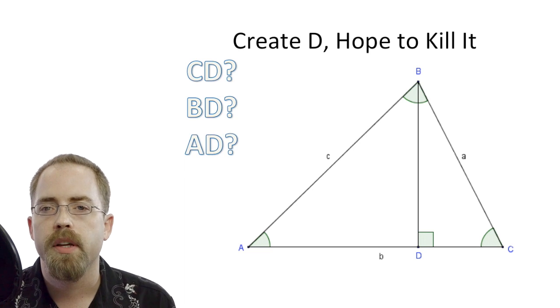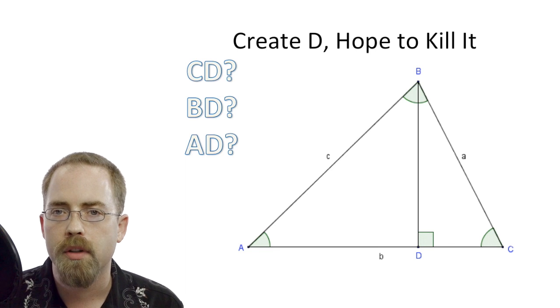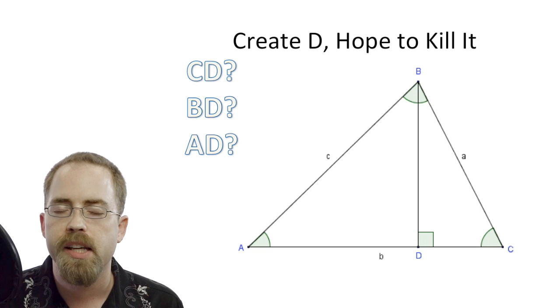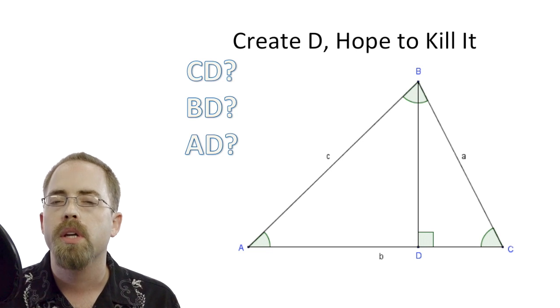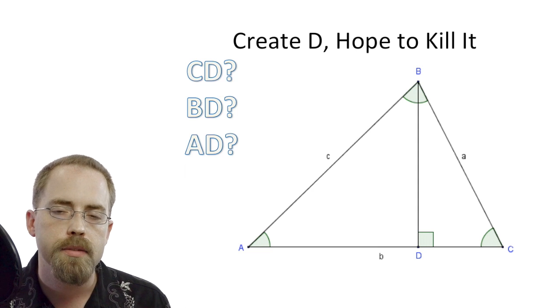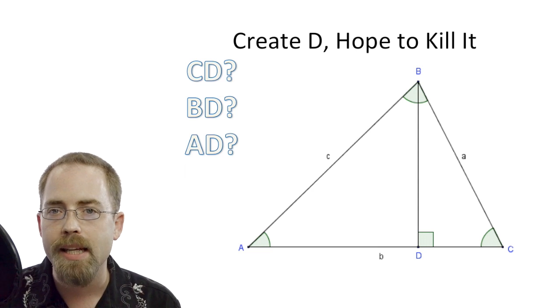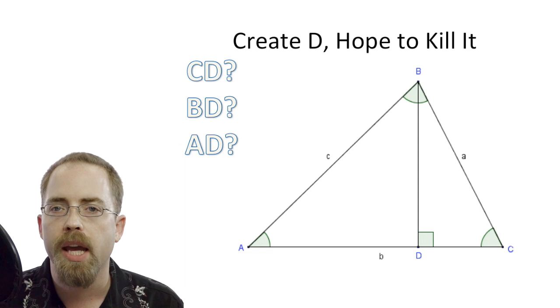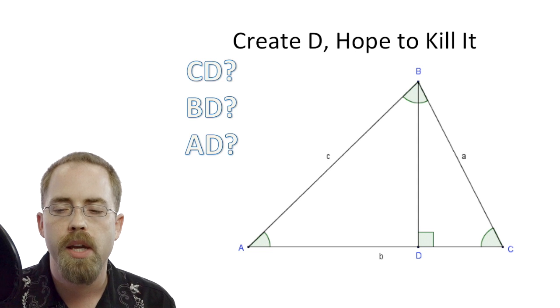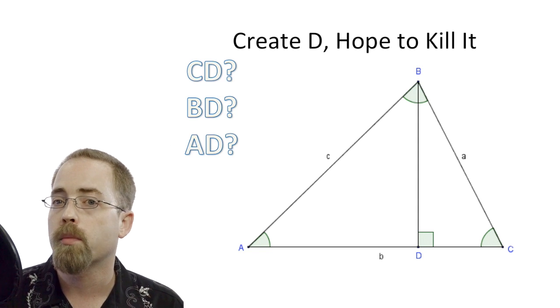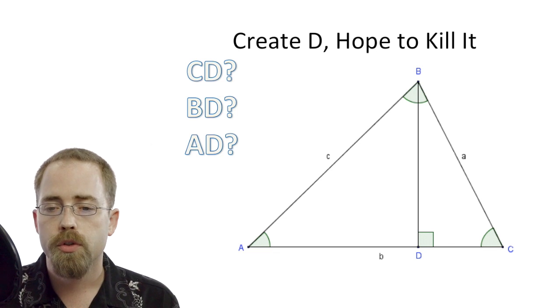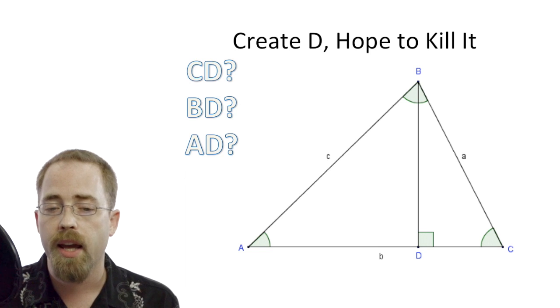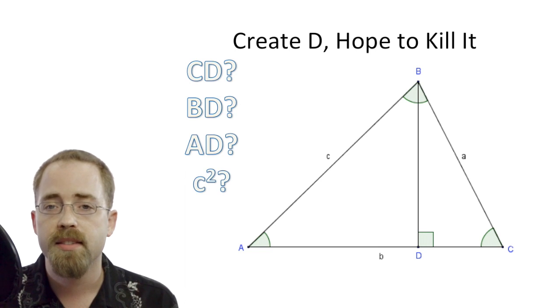And then AD over there is just going to be what's left on the bottom. So that whole bottom piece, what you could call side AC, capital A capital C, is also equal to lowercase b, that the whole bottom piece of our triangle here is b long. And if we subtract CD from it, then that's what AD is. So AD equals lowercase b minus capital CD. And then we just found what CD was equal to.